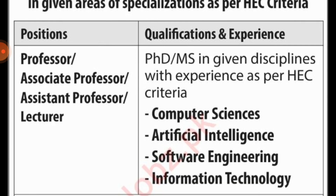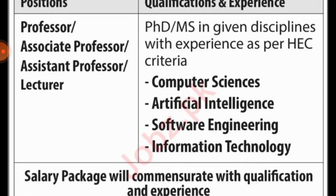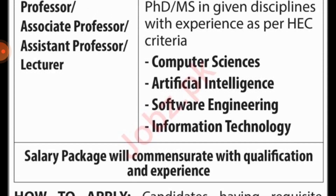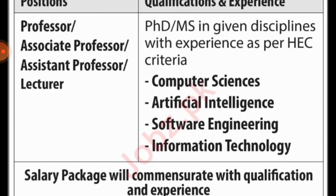Positions of professor, associate professor, assistant professor, and lecturer are available in Computer Science, Artificial Intelligence, Software Engineering, and Information Technology — four subjects in total. Candidates must hold an MS or PhD for these positions. You will need to know about the HEC criteria for each level.